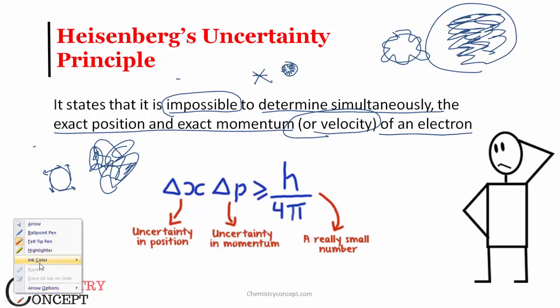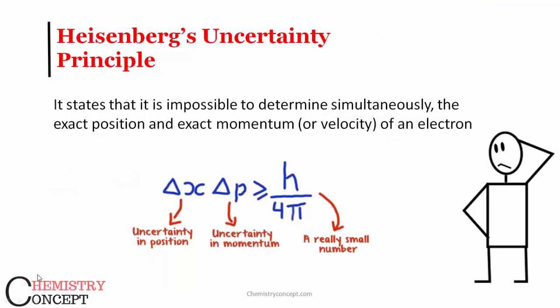Now, if it is really so that I cannot find out the exact position and exact velocity, then there is a problem. The problem is with the concept of orbits.